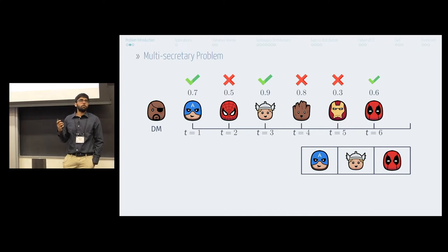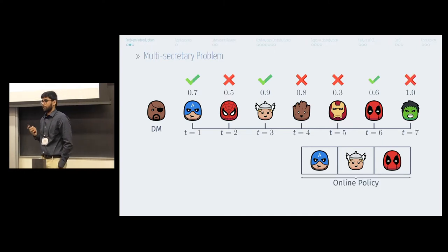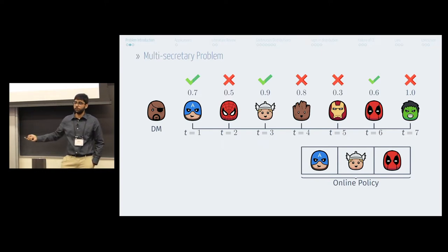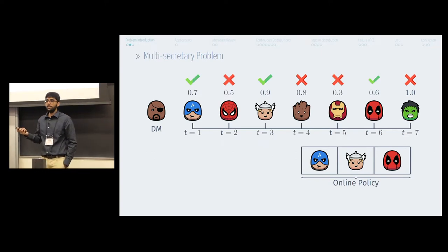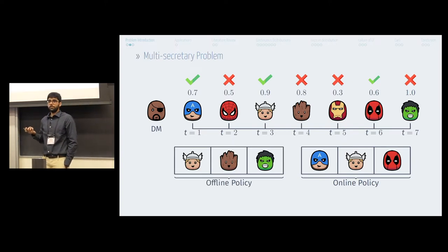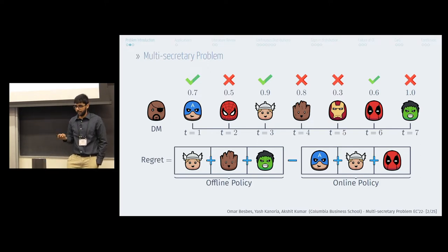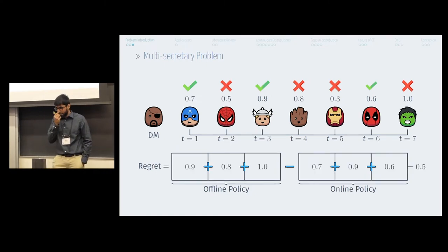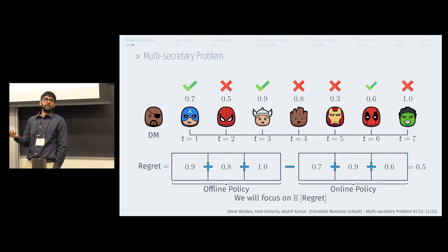After you have exhausted your budget, everyone else is rejected. So under an online policy, you would have selected Captain America, Thor, and Deadpool as your superheroes. However, if you had the ability to look into the future like Doctor Strange, you would have selected Thor, Groot, and Hulk. This leads to what we define as regret, which is the difference between the hindsight optimal policy and your policy. In this example, you accrue a regret of 0.5, and the focus will be on the expected regret.